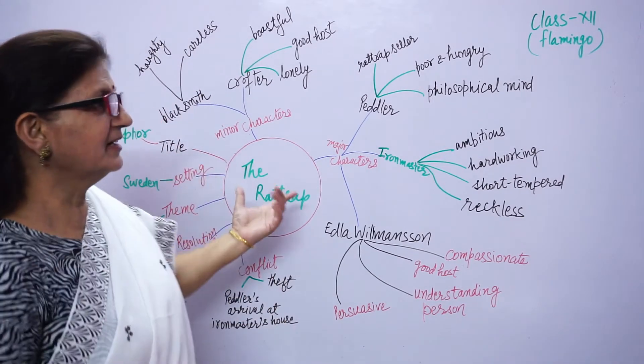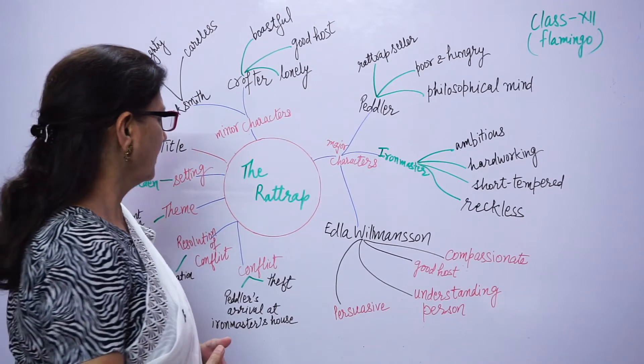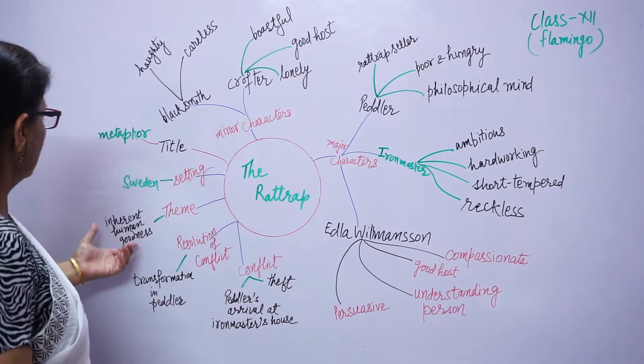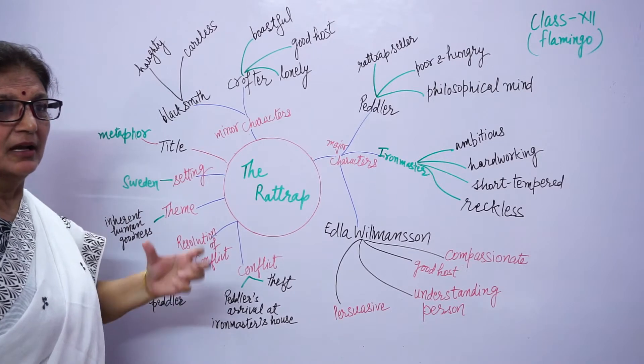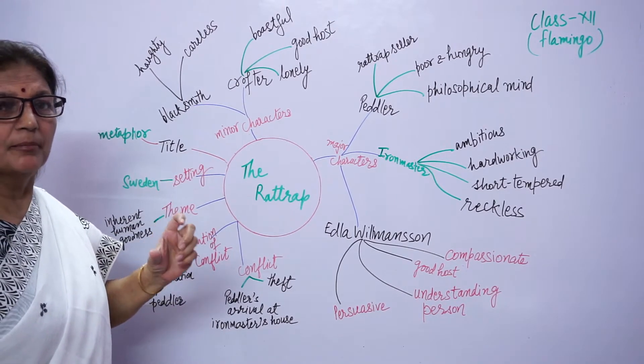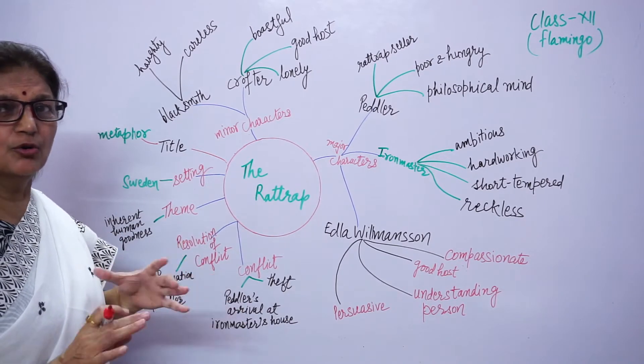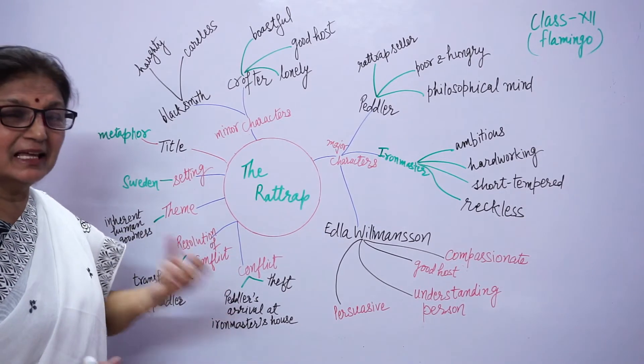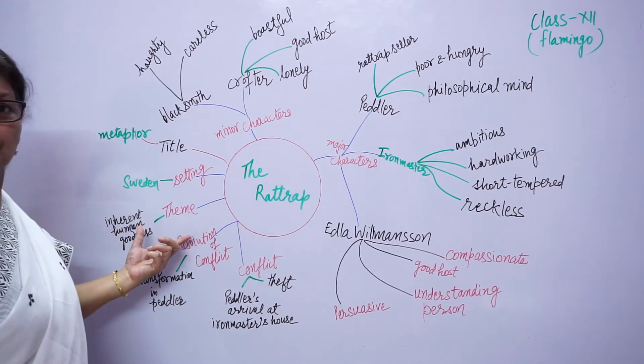Your lesson is The Rat Trap by Selma Lagerlöf. In this story, first we will see the theme of the story: inherent human goodness. According to the writer, human beings are basically good. But under circumstances, sometimes human beings go the wrong way. But if we understand him or her, we can draw the goodness in human beings. This is the theme of the story.